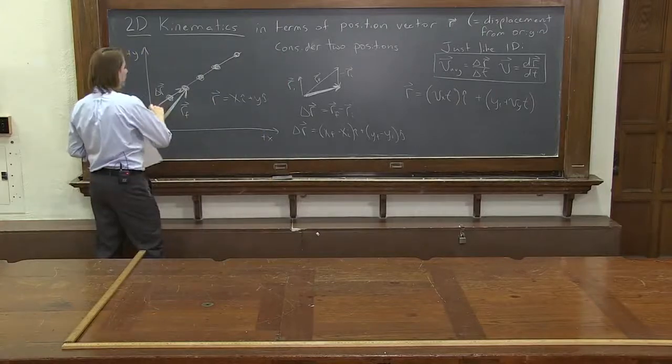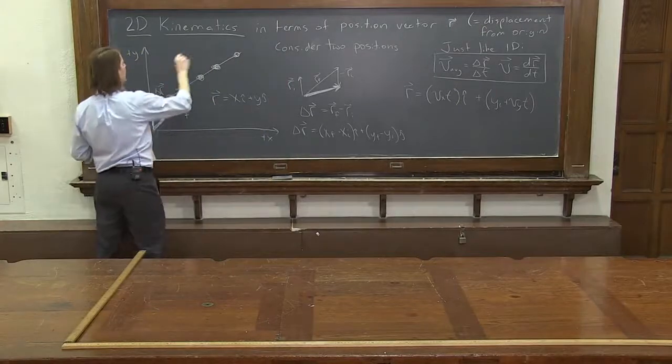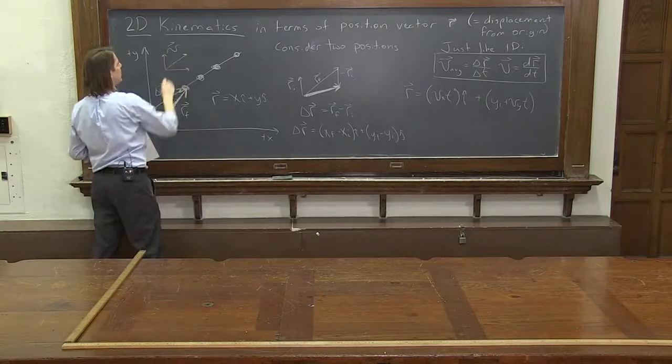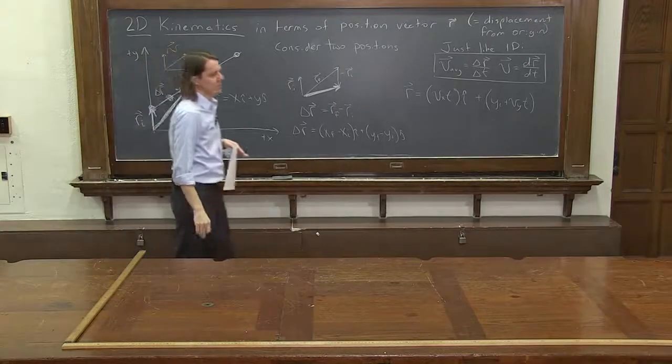Now remember, those components are like this. This is x, y. We could draw the velocity like that. It has an x component and a y component. That's what vx and vy are.